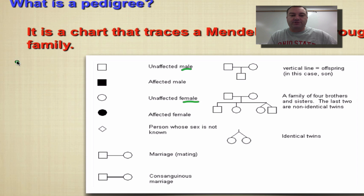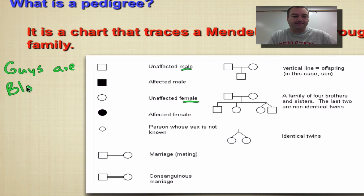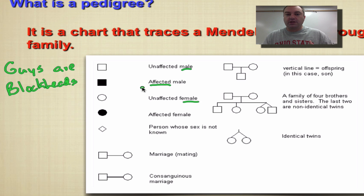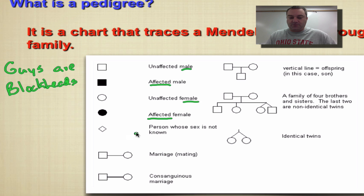A great way to remember the difference between circles and squares: guys are blockheads. So the guys are the blockheads — squares — and circles are the girls. Now notice this colored-in square means it's an affected male; in other words, it shows the Mendelian trait. And the same way with the circle — a colored-in circle is a female who shows the trait.